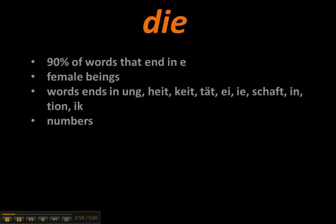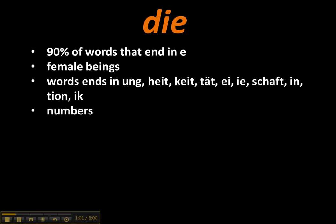For 'die' words, or feminine nouns: 90% of words that end in -e will be feminine — for example, die Landkarte or die Kreide. A female being such as die Tochter or die Frau is feminine. Words with the suffixes -ung, -heit, -keit, -ität, -ie, -schaft, -in, -tion, or -ik are mostly feminine, and so are numbers.